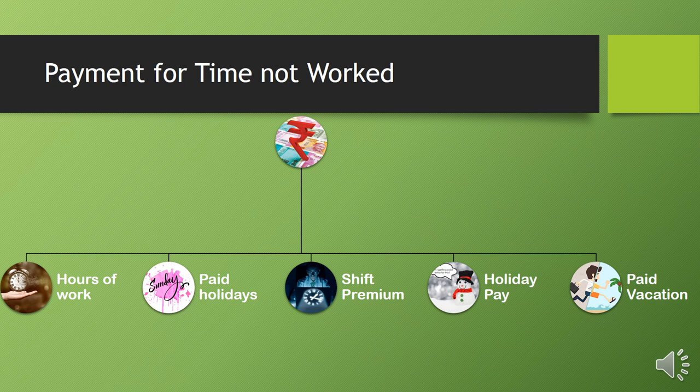Next is paid vacation. Workers in manufacturing, mining, and related sectors who have worked for 240 days during a calendar year are eligible for paid vacation at the rate of one day for every 20 days worked. For example, whether it is an academic year or financial year, if they worked for 240 days they are eligible for paid vacations — some government organizations provide up to two months of paid vacation — because they have continuously worked for a prescribed number of days.